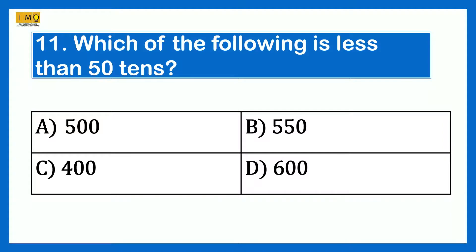Which of the following is less than 50 tens? Option A 500, Option B 550, Option C 400, Option D 600. 50 tens is 500. So we need a number that is less than 500. The answer is Option C 400.